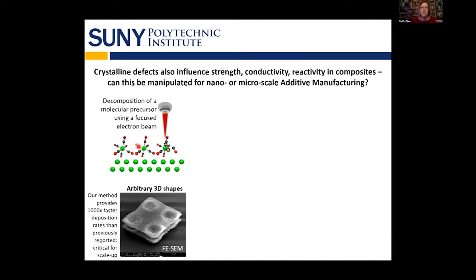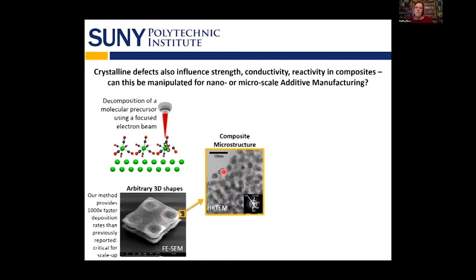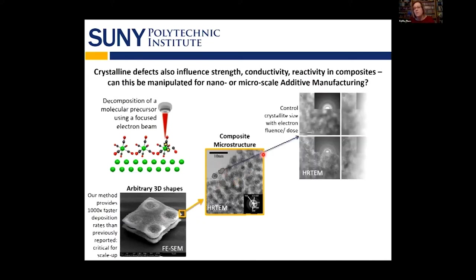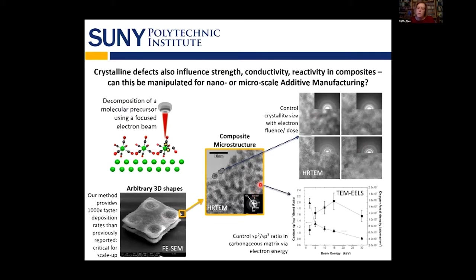These are structures we're making in the microscope by bleeding in a little bit of gas and using the electron beam to break it down. Since we can scan the beam, we can make arbitrary shapes like little egg crates. Zooming into those egg crates, we find nanoparticles in a carbonaceous matrix. We can manipulate the size of the particles — a series of images shows the particles getting larger and the diffraction patterns getting crisper, indicating enhanced particle size. We can also manipulate the carbonaceous matrix — for example, making it less conductive and harder by manipulating the bonding ratio from sp2, which is graphite-like, to sp3-like, which is more diamond-like. We do a lot of electron microscopy and spectroscopy to confirm those outcomes.